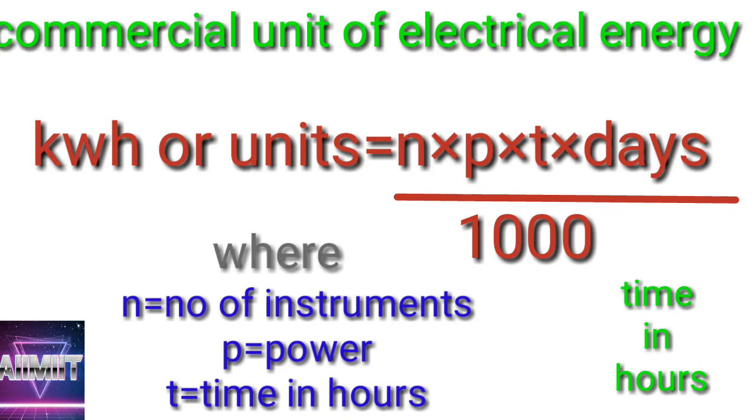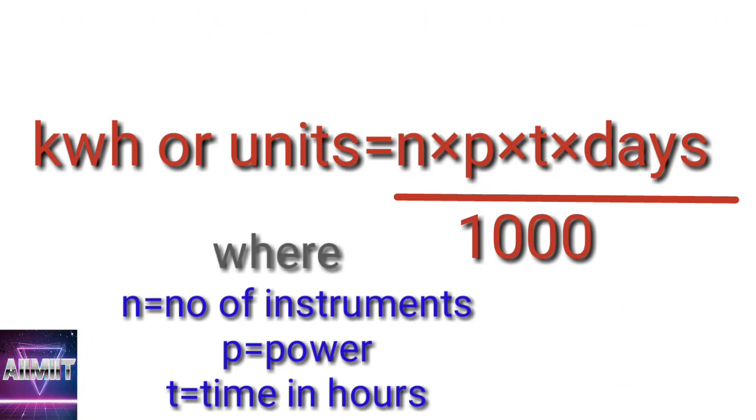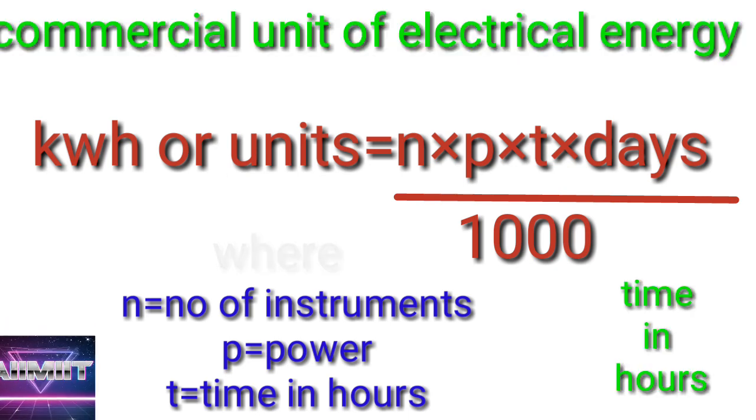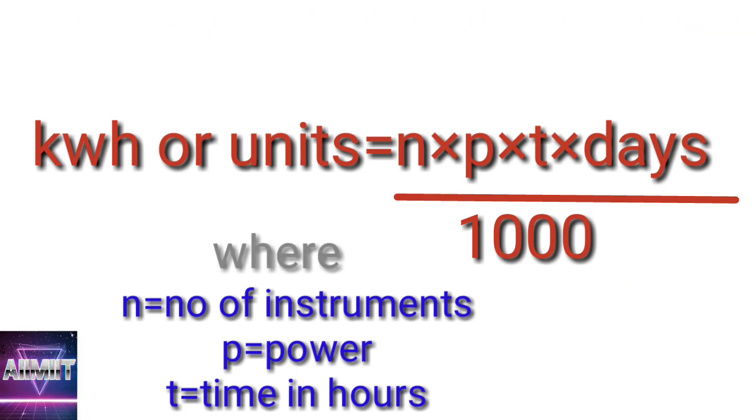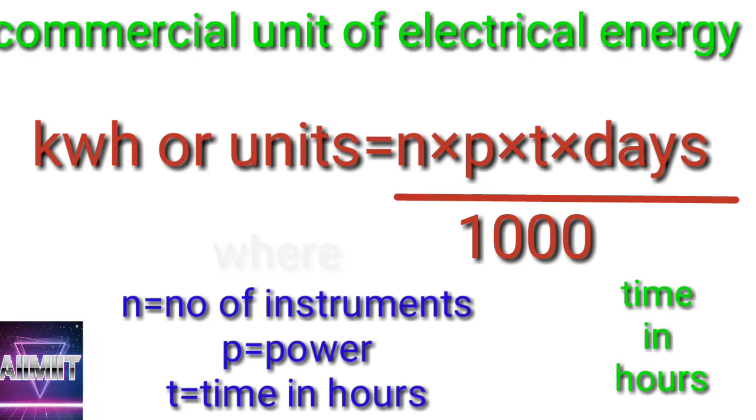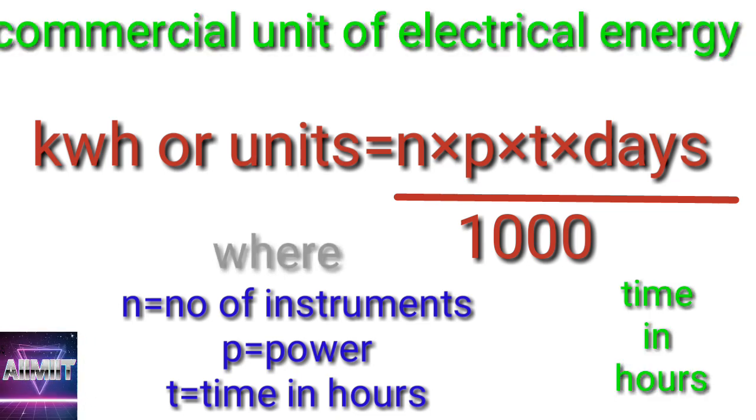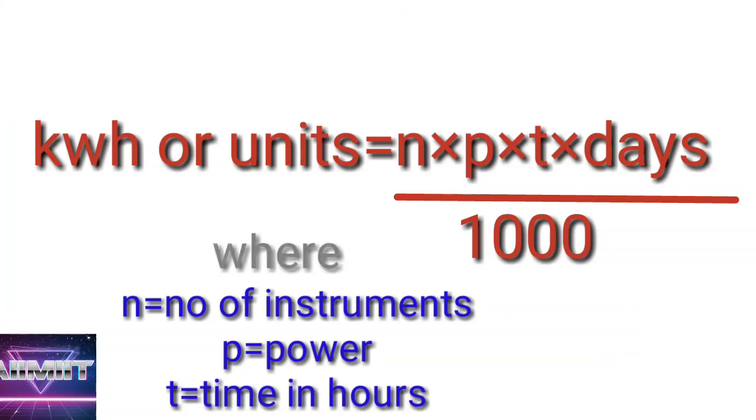Number eight: Finding kilowatt hour or number of units, the commercial unit of electrical energy, is n × P × t × days / 1000. This is the only formula where we will take time in hours. Remaining all problems will take time in seconds, but this is the only formula where we will take time in hours.